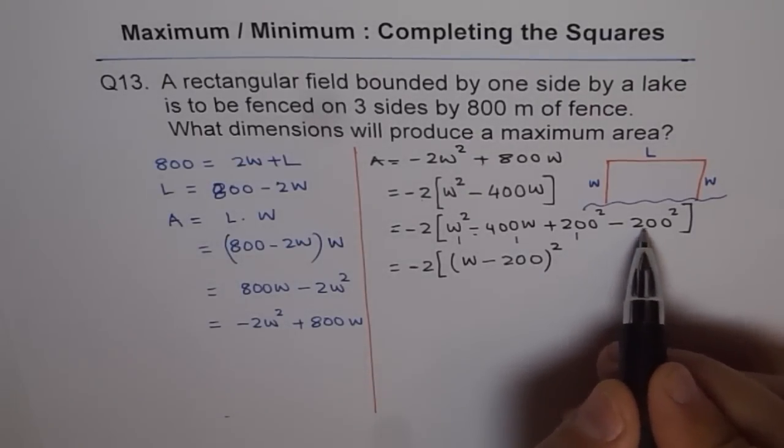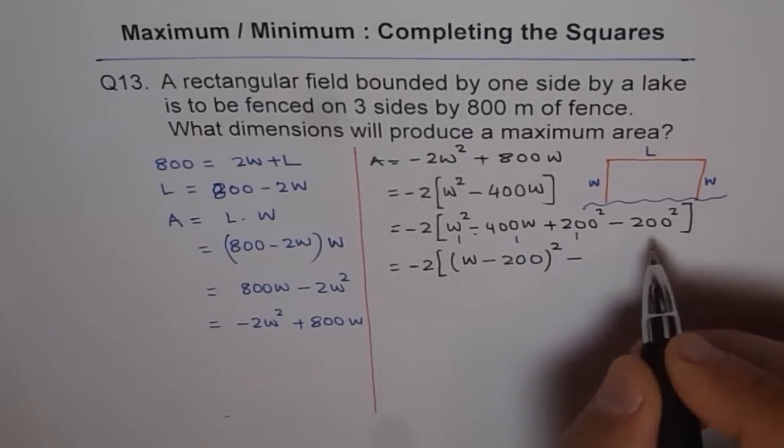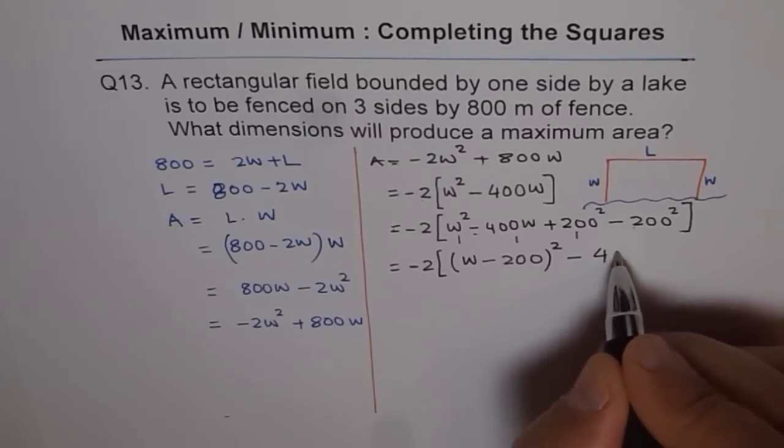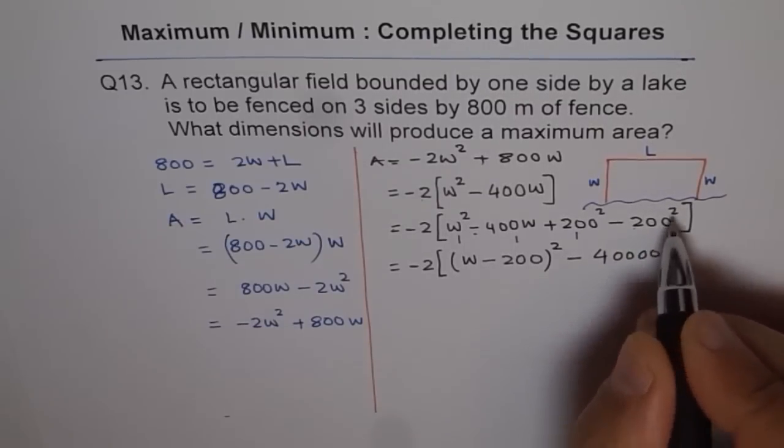And now we can write minus 200 square which is minus 2 square is 4 and 2 zeros become 4 zeros. Square.